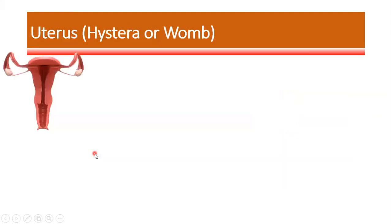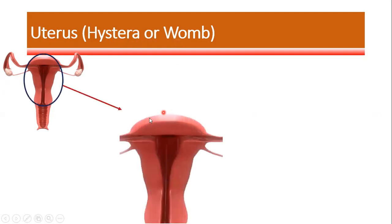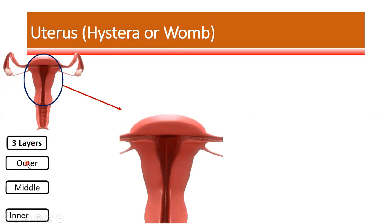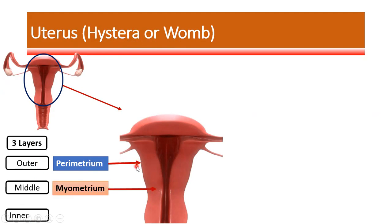The next organ is the uterus, also known as the womb. The uterus is mainly divided into three parts and has three different layers. The three layers of the uterus are: the outer layer known as the perimetrium, the middle layer known as the myometrium, and the inner layer known as the endometrium.